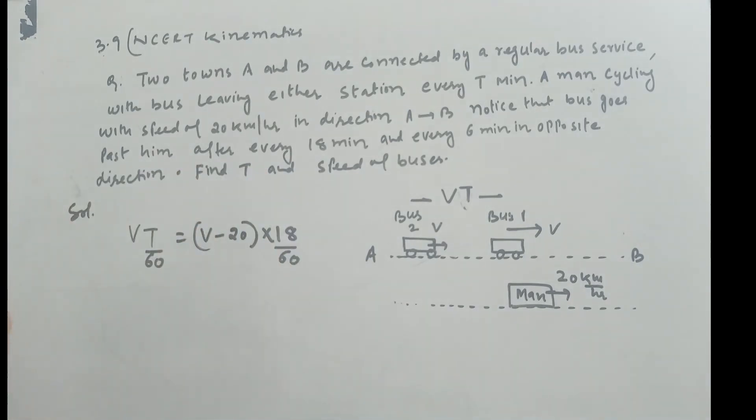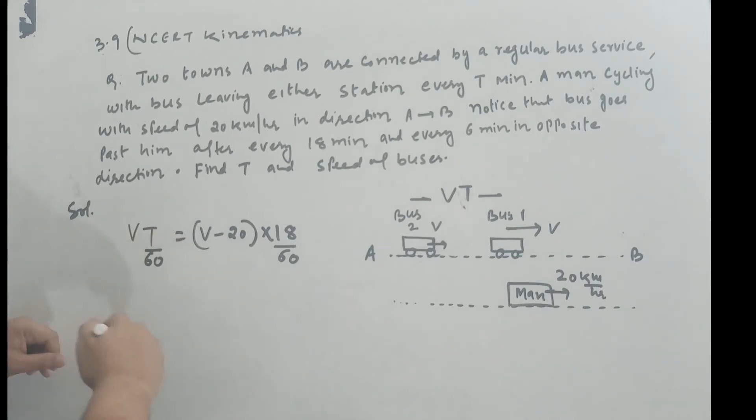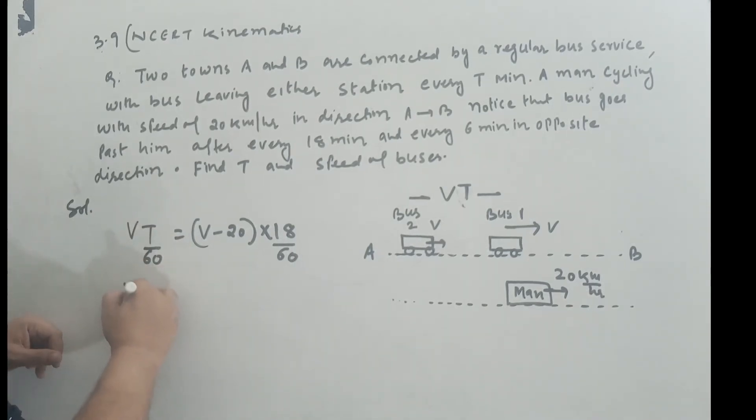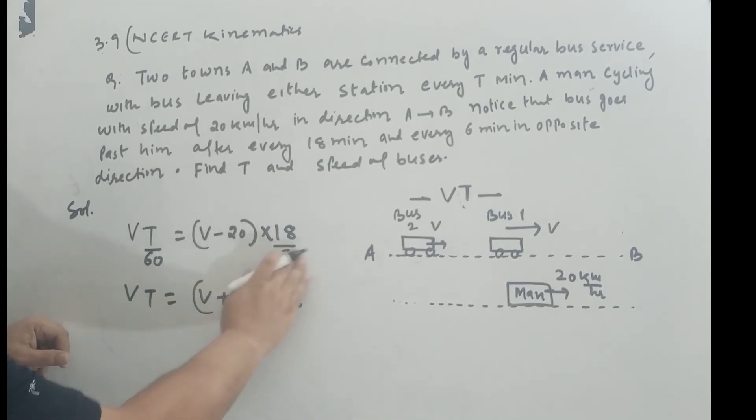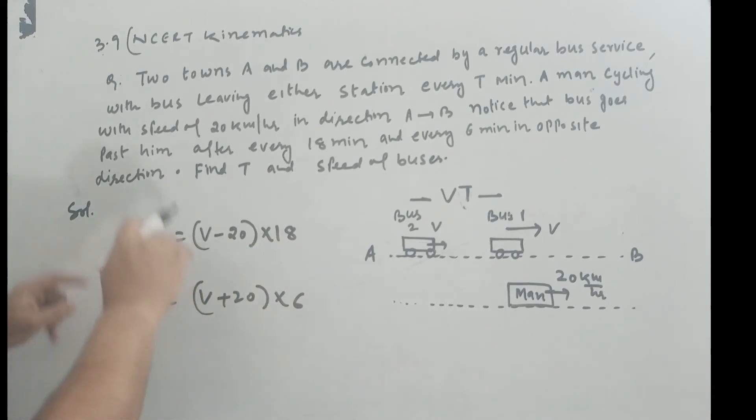Similarly, for the bus going from B to A, if we write the equation for that, it will be VT equal to V plus 20 into 6, right? By 60 will cancel.